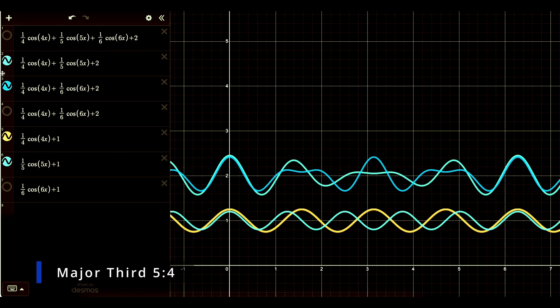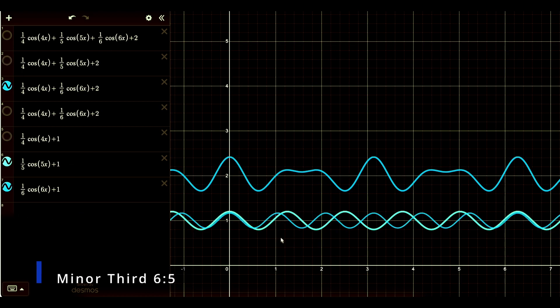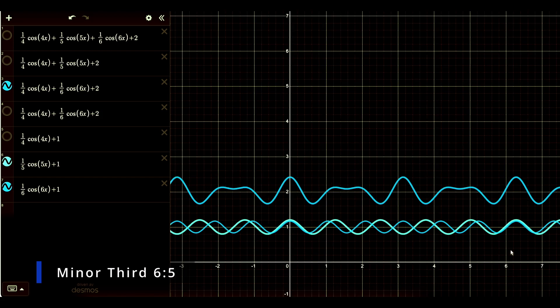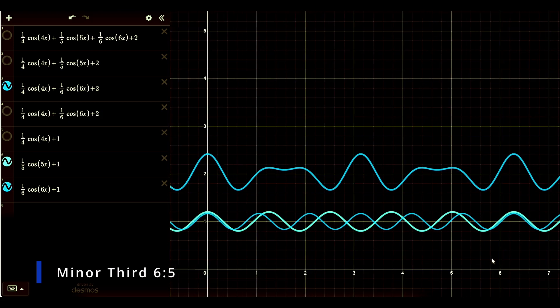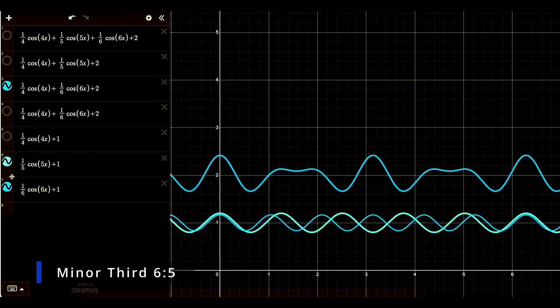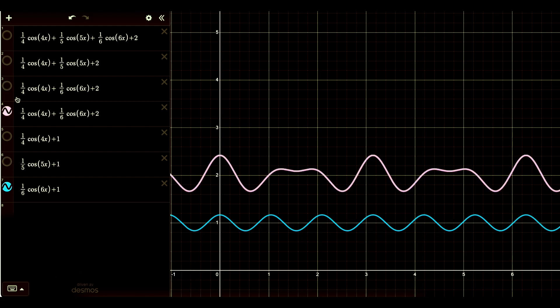We can add the minor third. There it is represented in its Fourier transform. And then we can do one of the four to six, which will be a fifth. Which looks like this.